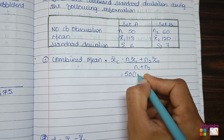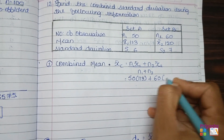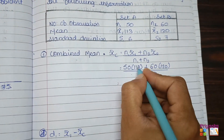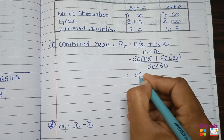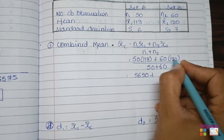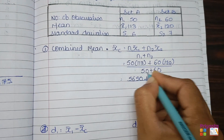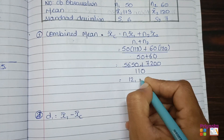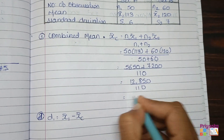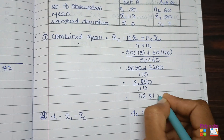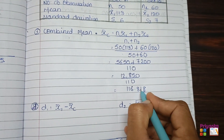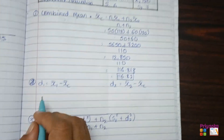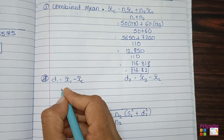For combined mean: n1 times mean1 plus n2 times mean2 divided by n1 plus n2. That is 50 times 113 plus 60 times 120, divided by 50 plus 60. This gives 5650 plus 7200 equals 12850, divided by 110. The combined mean is 116.818, which rounds to 116.82.